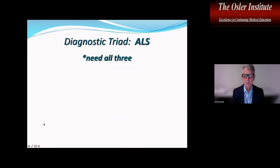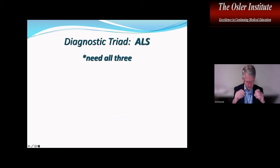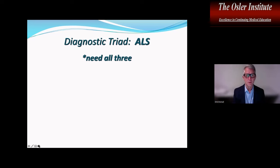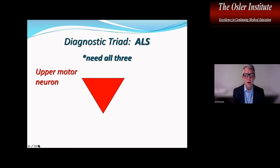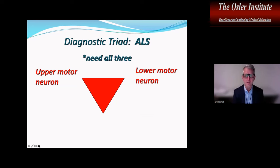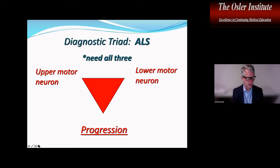ALS has a diagnostic triad — you really need all three to make the diagnosis. This is a clinical diagnosis, so the clinical syndrome and exam are very important. You need upper motor neuron findings, going from the cortex down to the anterior horn cell; you need lower motor neuron or anterior horn cell findings, going from the spinal cord down to the muscle; and you've got to have progression. ALS is not a static disease — it progresses over time.